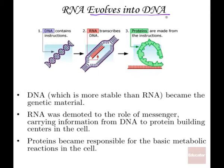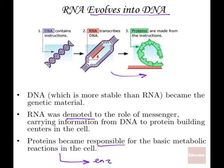Here we can see the process of transcription and translation, where DNA breaks apart and RNA copies the information from DNA, then goes out into the cytoplasm and assembles the protein based on the instructions carried from the DNA. RNA was then demoted to the role of messenger, and proteins became responsible for the basic metabolic functions and reactions in the cells, occurring through the process of enzymatic reaction.